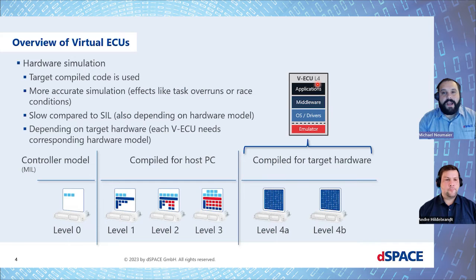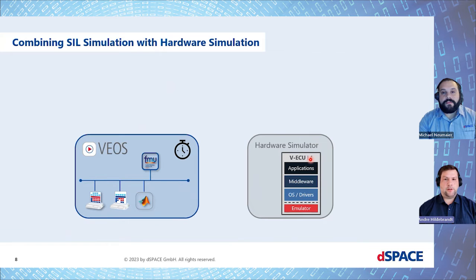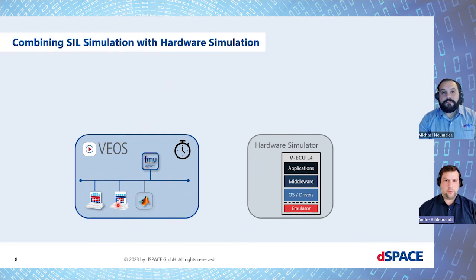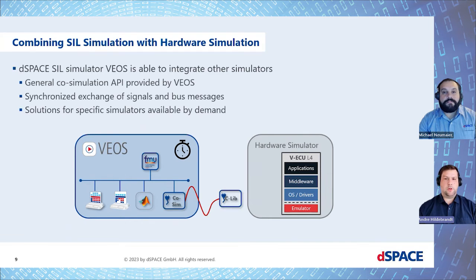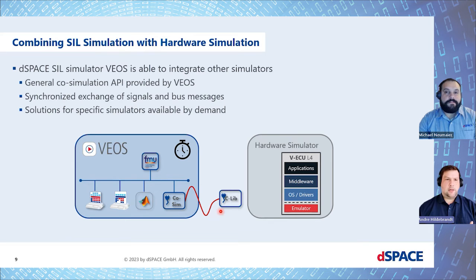Can a user combine both approaches? Yes, definitely. Both are just simulators. Our software-in-the-loop simulator is called VEOS, and it's a standard simulator — you can include not only virtual ECUs but any kind of plant model, FMUs, and so on, with a full network simulation. On the other hand, you have the Level 4 simulator, which can be any hardware simulator. VEOS provides a co-simulation API — you have an API in VEOS that is very easy to configure. You can use a JSON file with a basic description, and you have an attached C library.